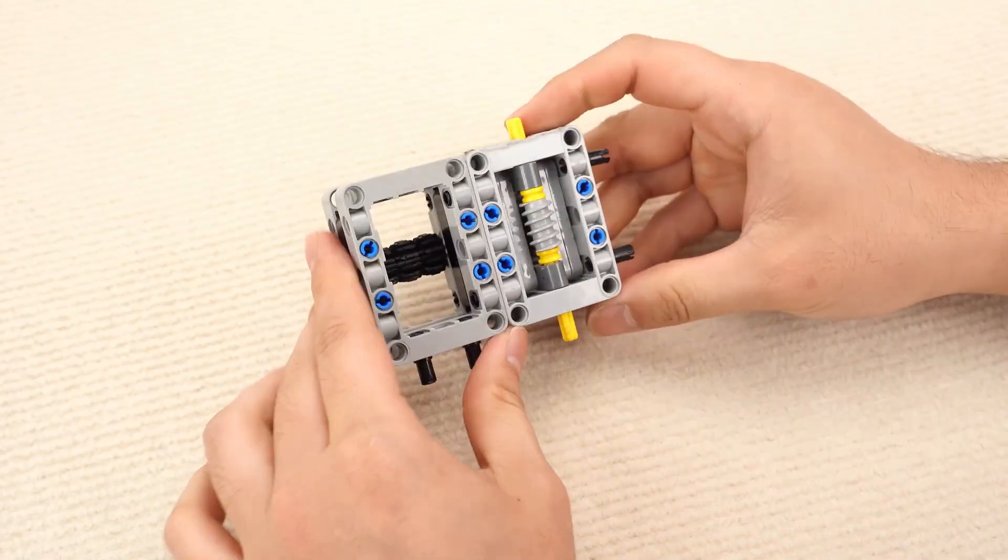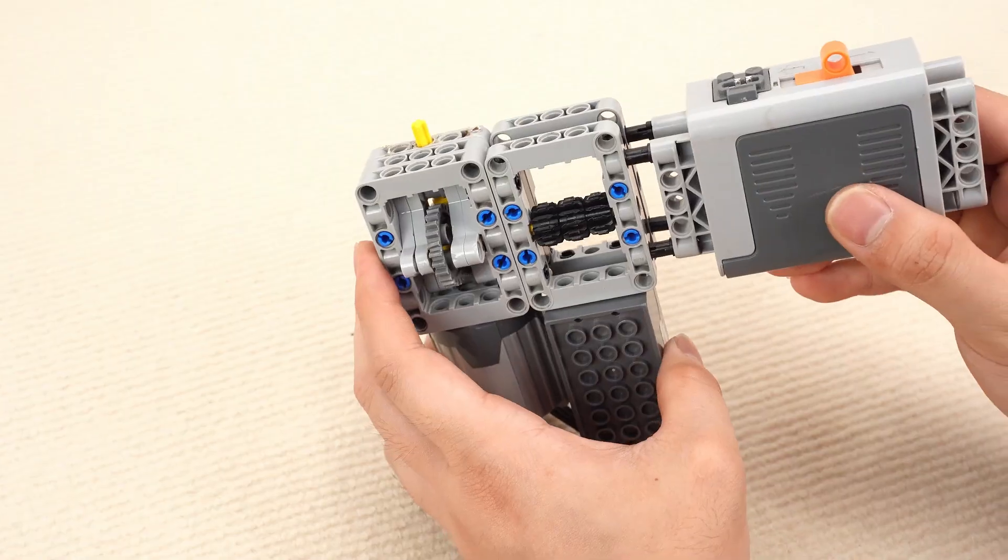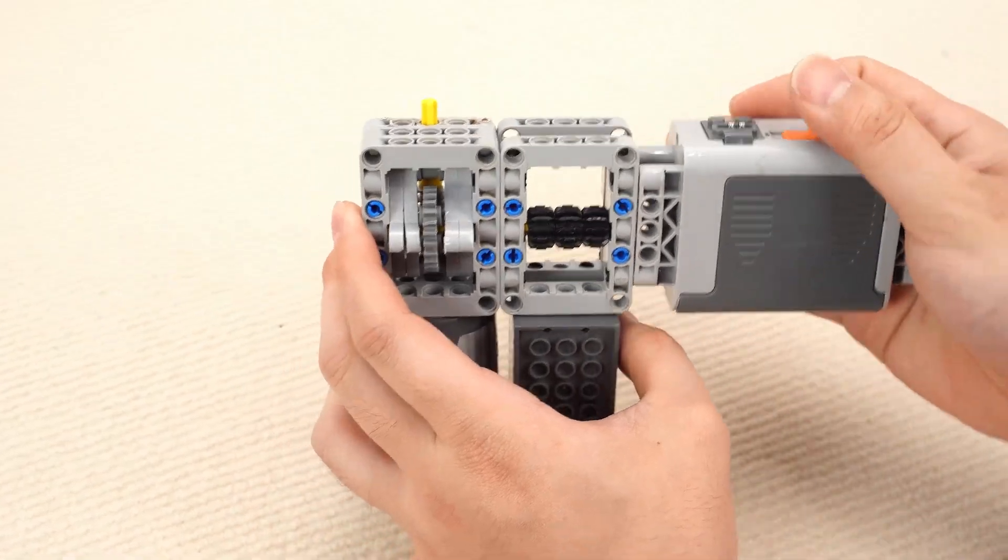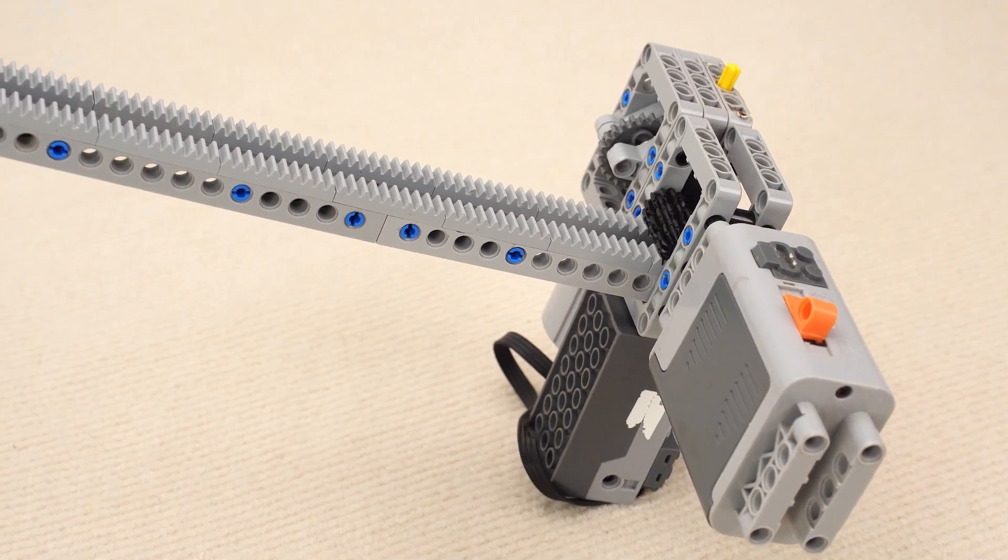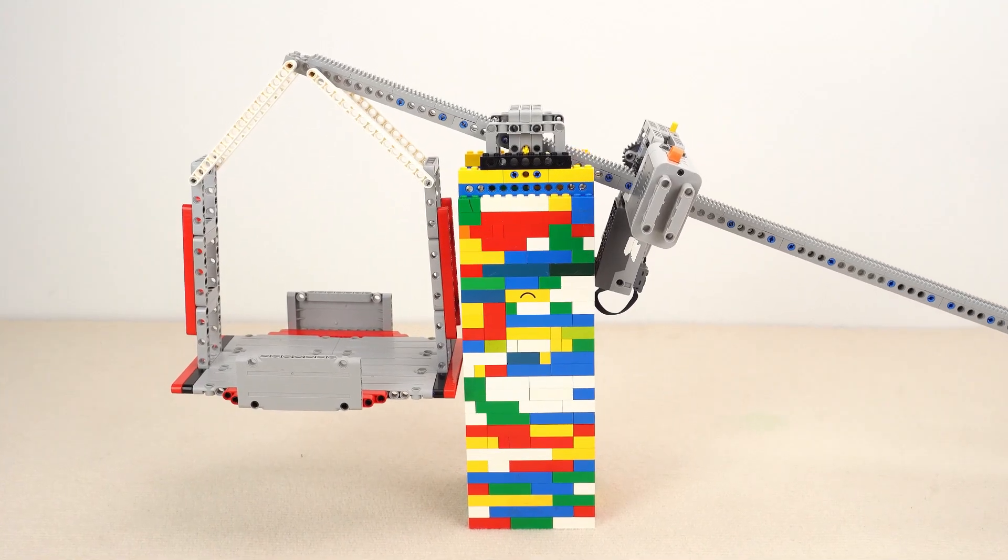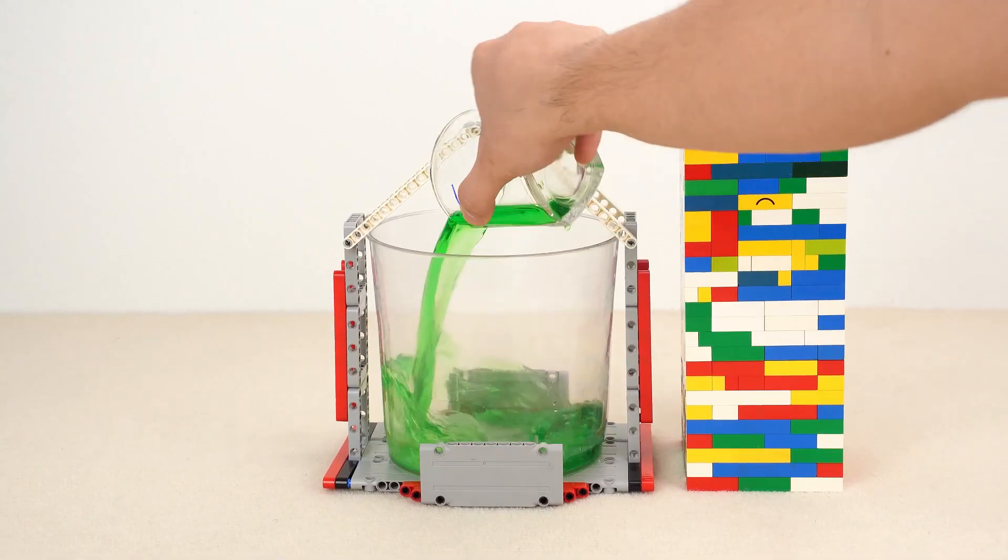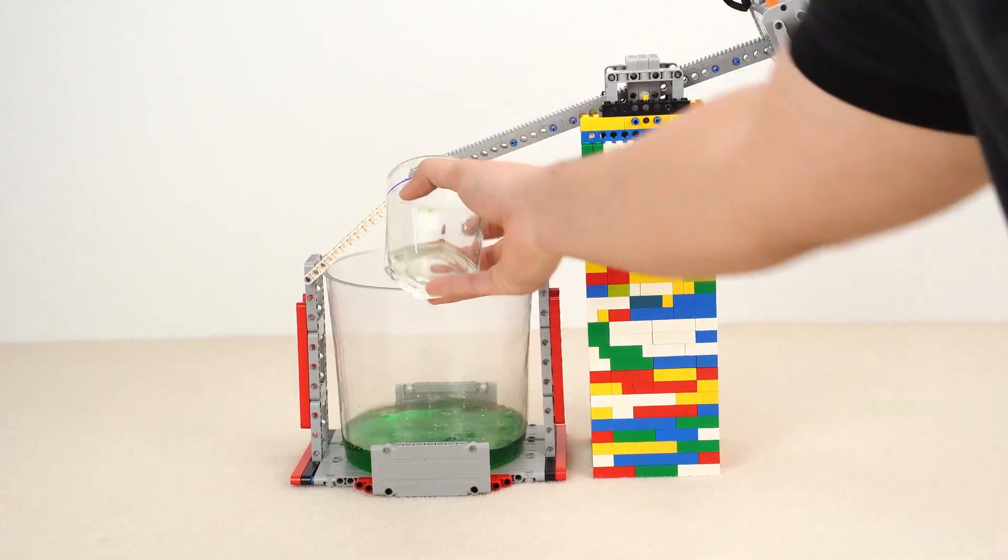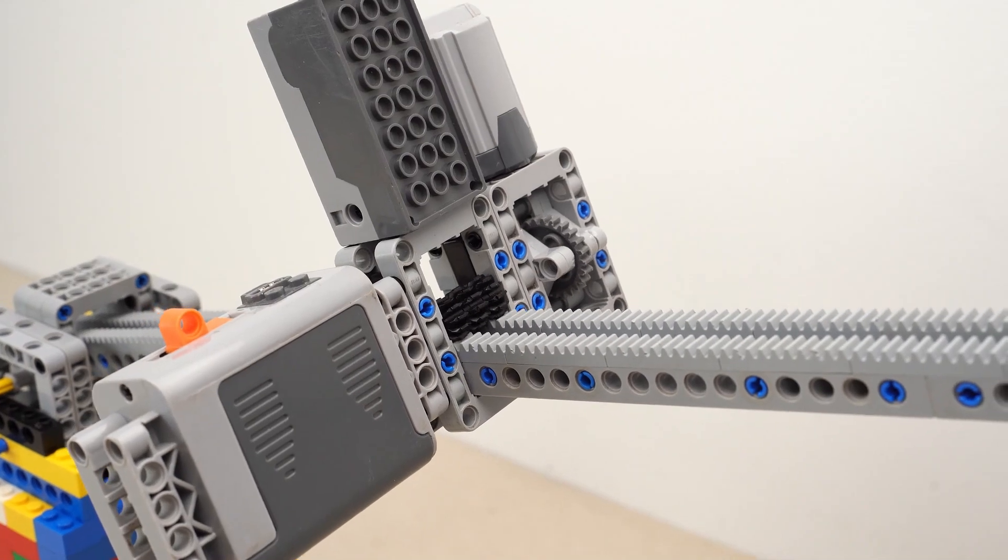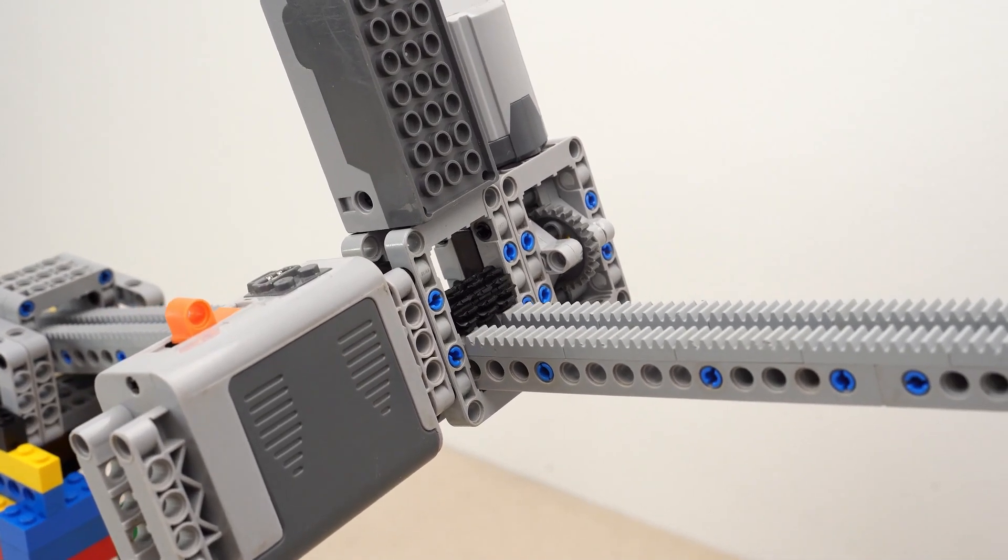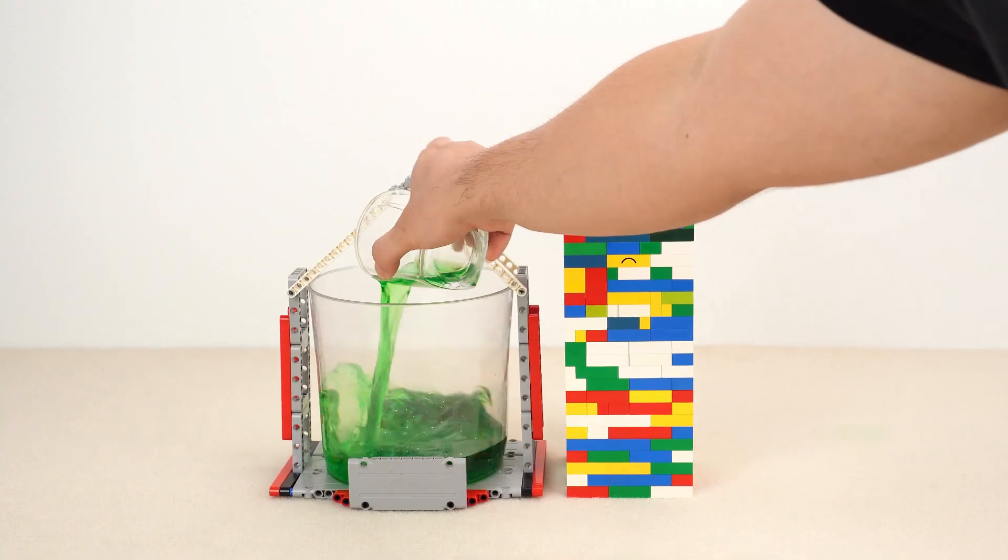Finally, the worm gear. Motor, control unit, and power functions motor. Let's test it. Looking good. Now, fill the jug with water. 458 grams. The motor is slowly moving away from the pillar. Yes, it lifted it. More water.